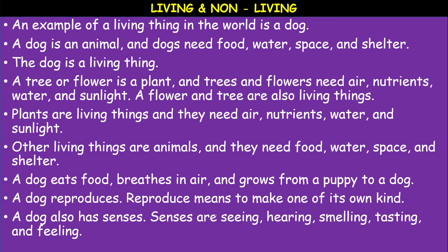A dog also has sense organs. The senses are: seeing with the help of eyes, hearing with the help of ears, smelling with the help of the nose, tasting with the help of the tongue, and feeling with the help of skin. These are the five senses we observe in all animals. These sense organs are considered the gateways of knowledge. Living organisms are able to know what is happening in their surroundings with the help of these five senses, which are coordinated by the brain.